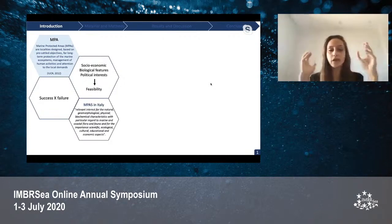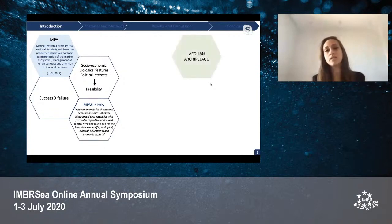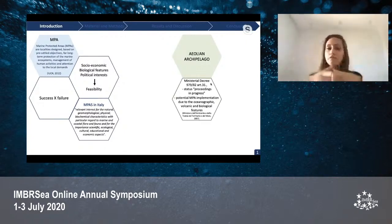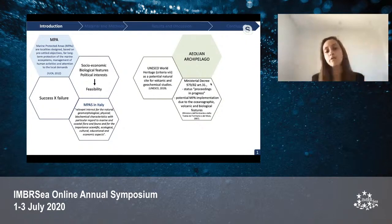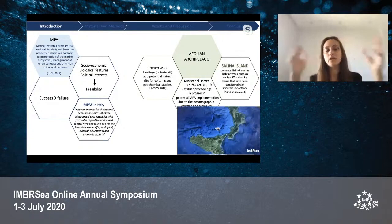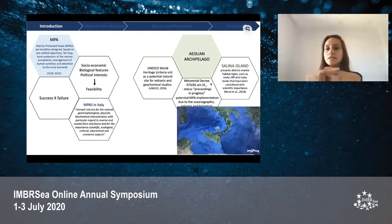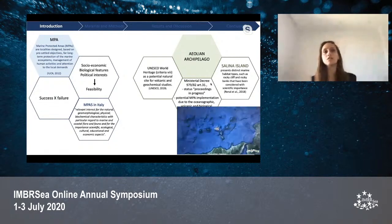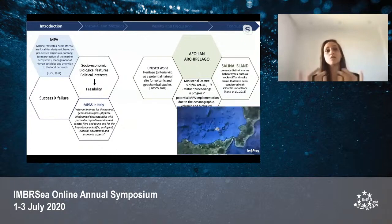According to Italian laws, MPAs have a similar definition as represented by IUCN. The area of interest in this study was the Aeolian archipelago, considered by a ministerial decree as a potential protected area due to its oceanographic, volcanic, and biological features. This area is also a UNESCO World Heritage site, which, although well defined for terrestrial characteristics, is still ambiguous regarding marine characteristics. One of the seven islands in this archipelago, the Island of Salina, is the second biggest island in the archipelago and presents distinct marine habitat types that have been considered scientifically important. Few studies on this ecological potential have been carried out, and that's why new complementary studies are important to bring more scientific knowledge to the area and support the implementation process.